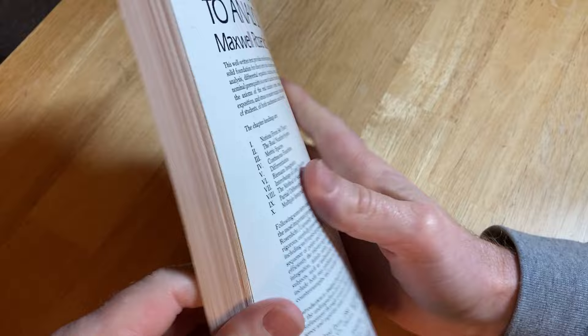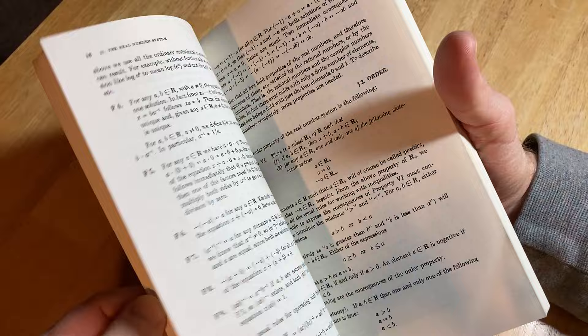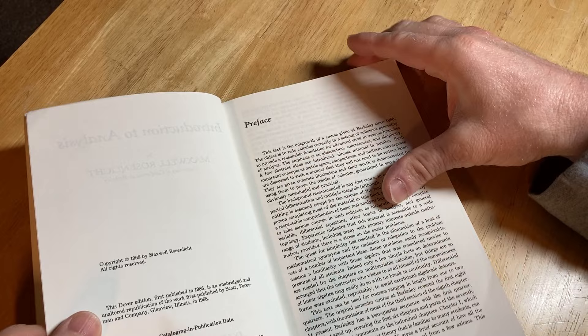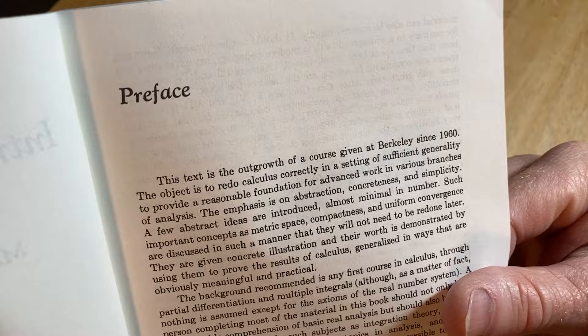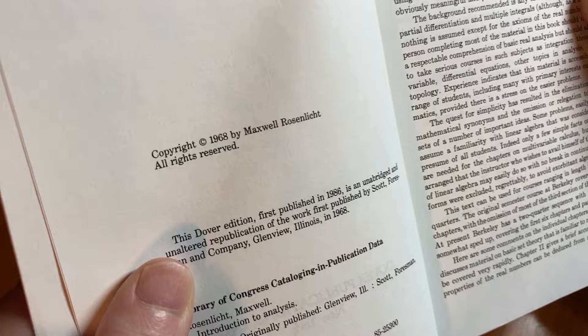It also means it's probably really easy to buy, like it's available. I'll leave the link in the description. Let's see what it contains. It's an outgrowth of a course given at Berkeley since 1960, copyright 1968.